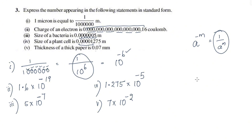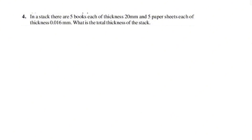In this stack there are 5 books, each of thickness 20 mm, and 5 paper sheets, each of thickness 0.016 mm. What is the total thickness of this stack? In one stack: 5 books with thickness 20 mm and 5 paper sheets with thickness 0.016 mm.